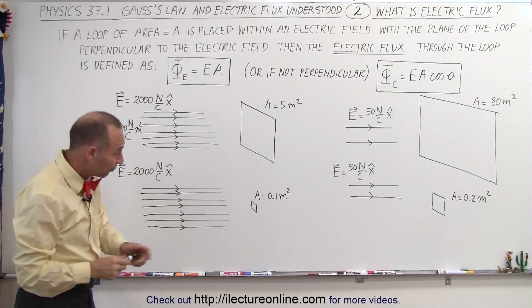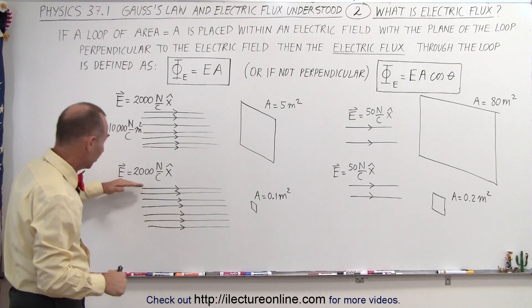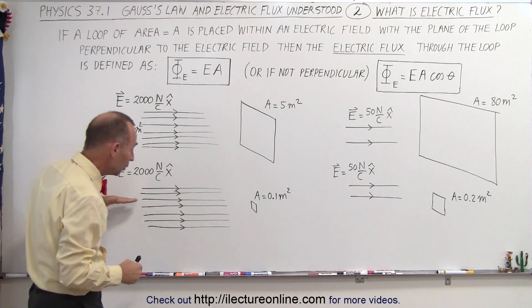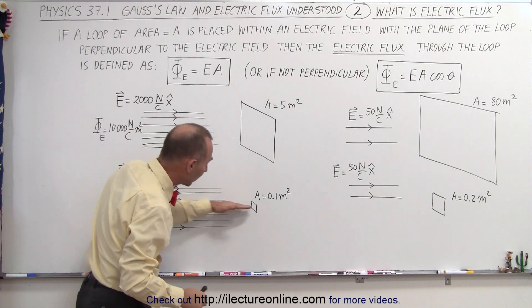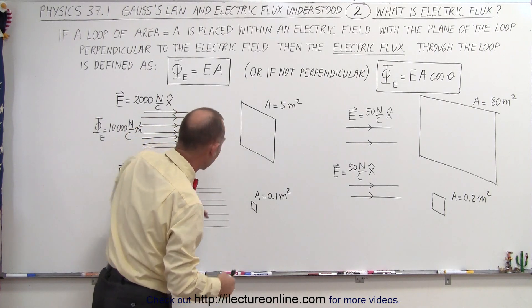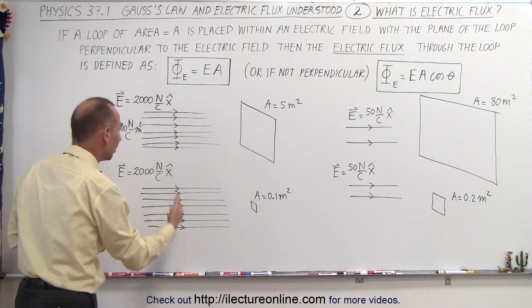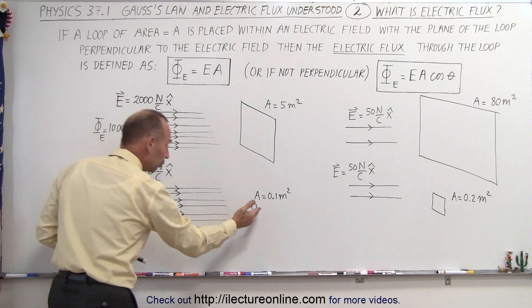But if the area is very small, but the same electric field, notice that only a few of the field lines will go to the area here, many will go to the area there. So when we multiply these together, the electric flux through this loop,